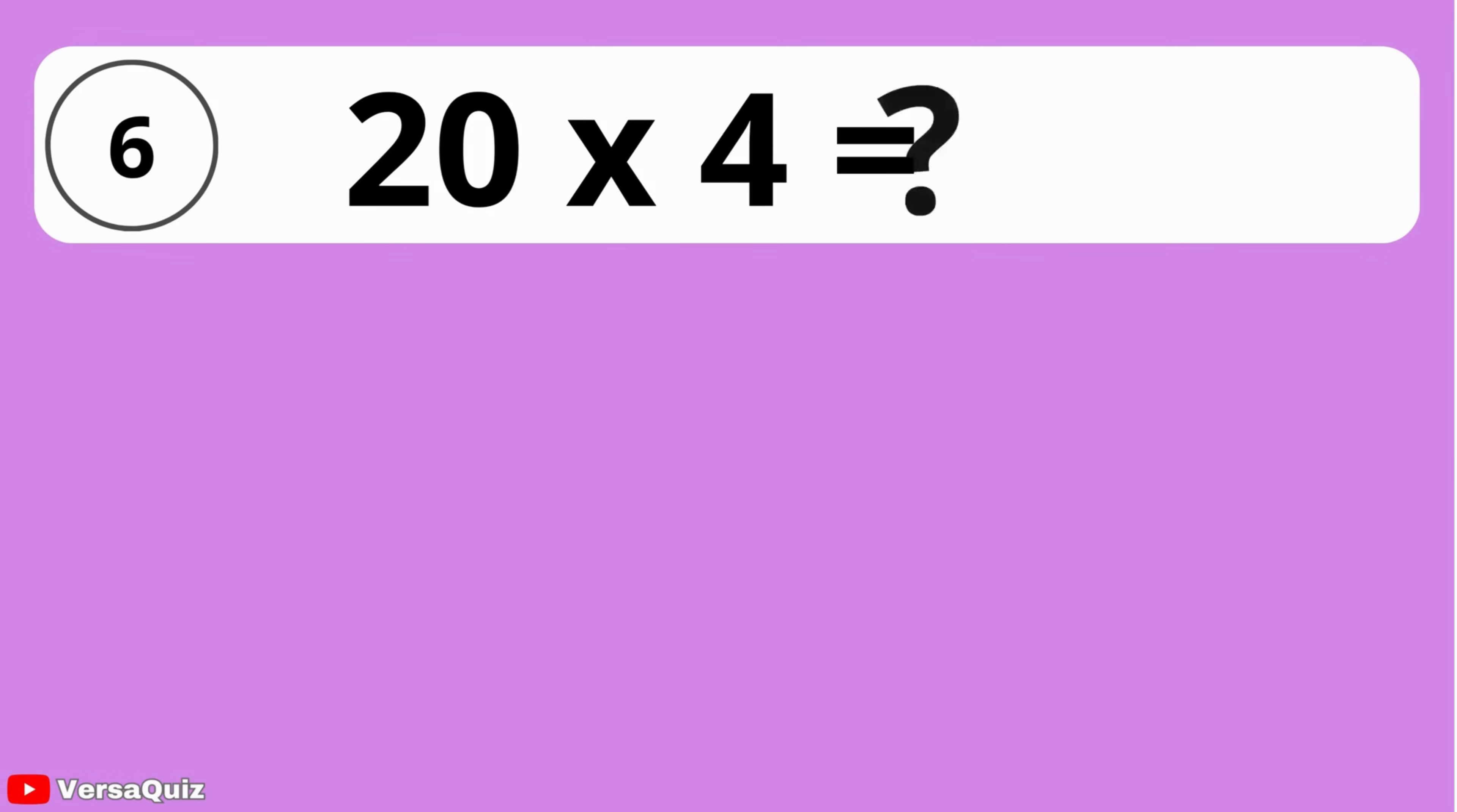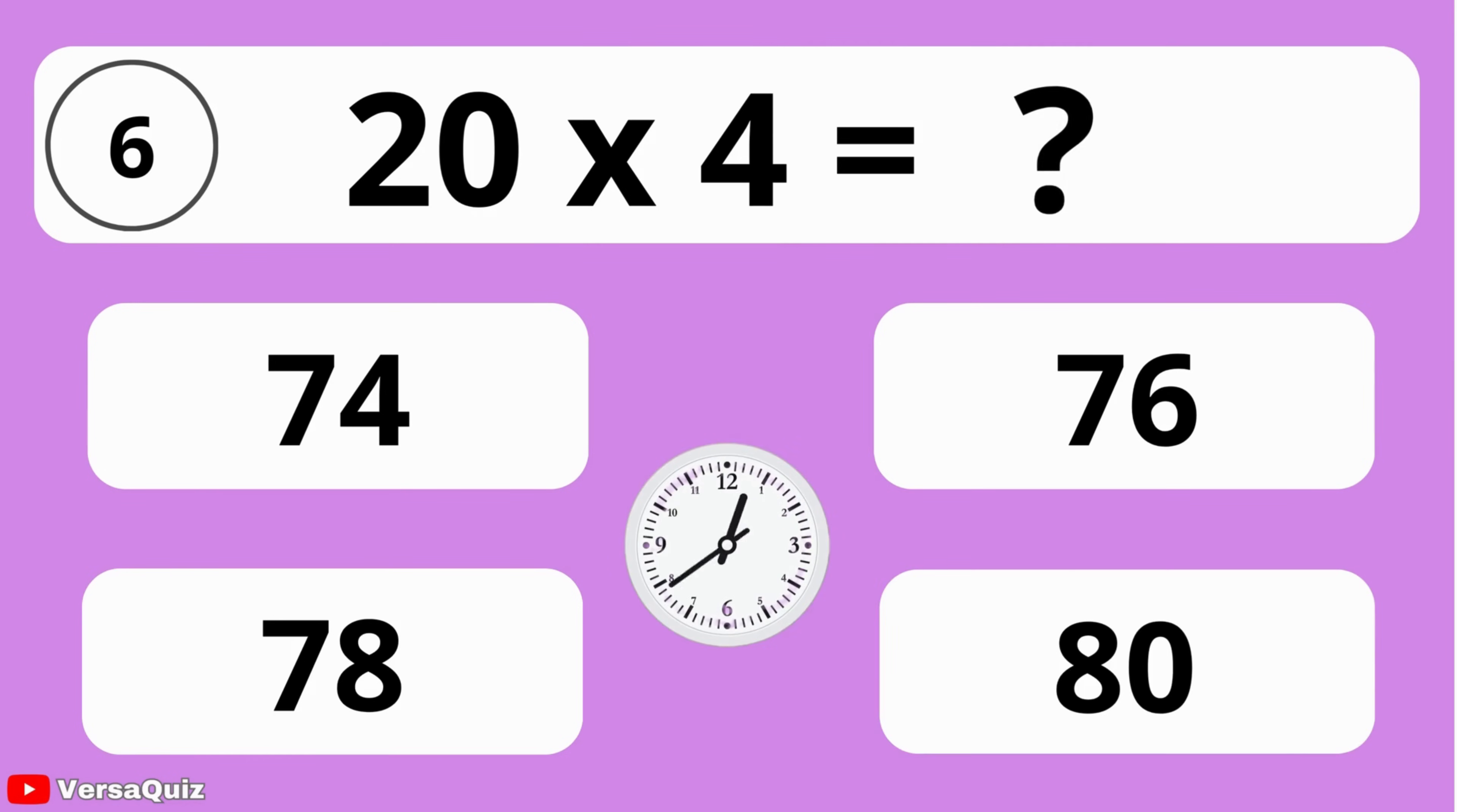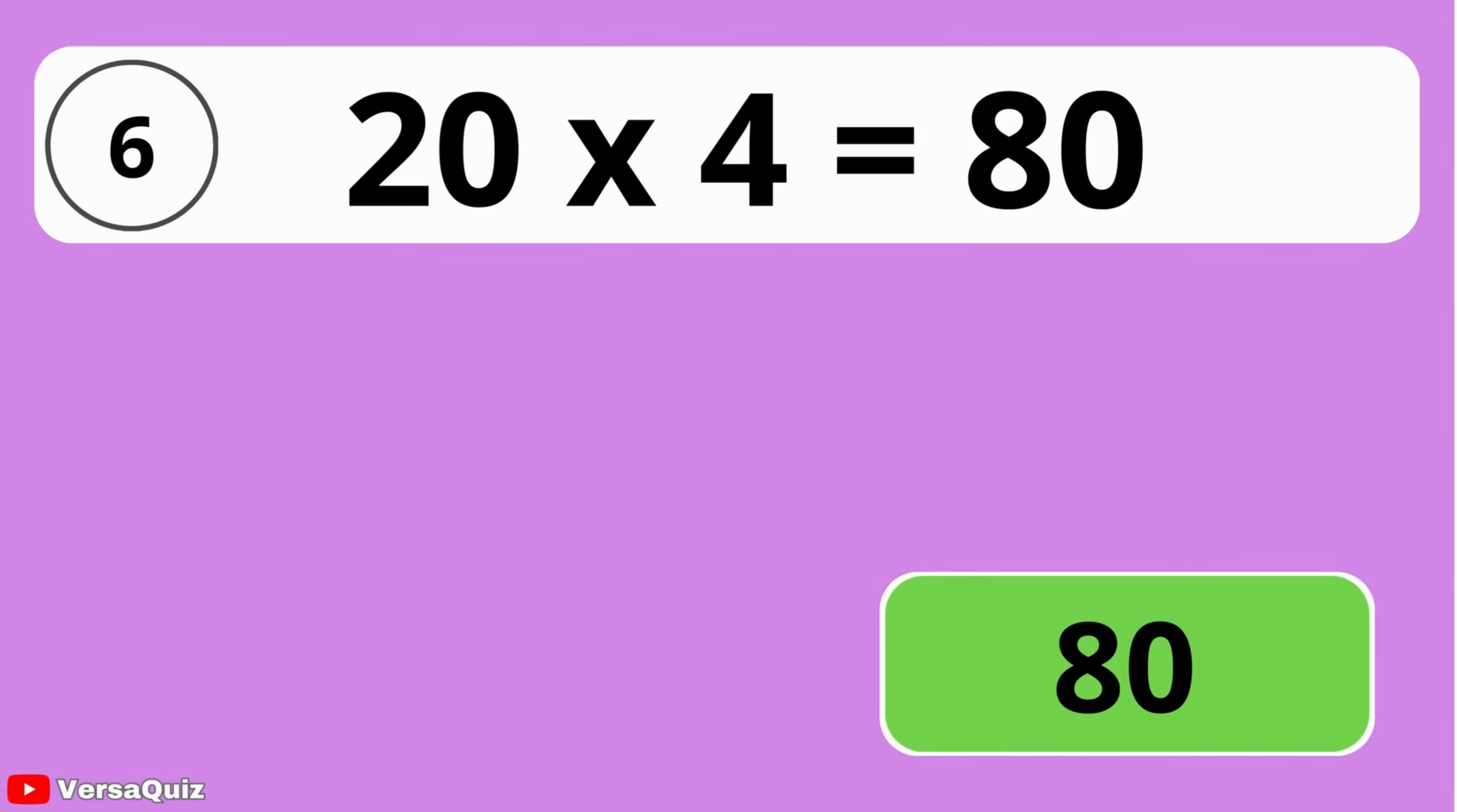Multiplying 20 by 4. What is the result? 74, 76, 78, or 80? The answer is 80. The answer to 20 multiplied by 4 is 80.